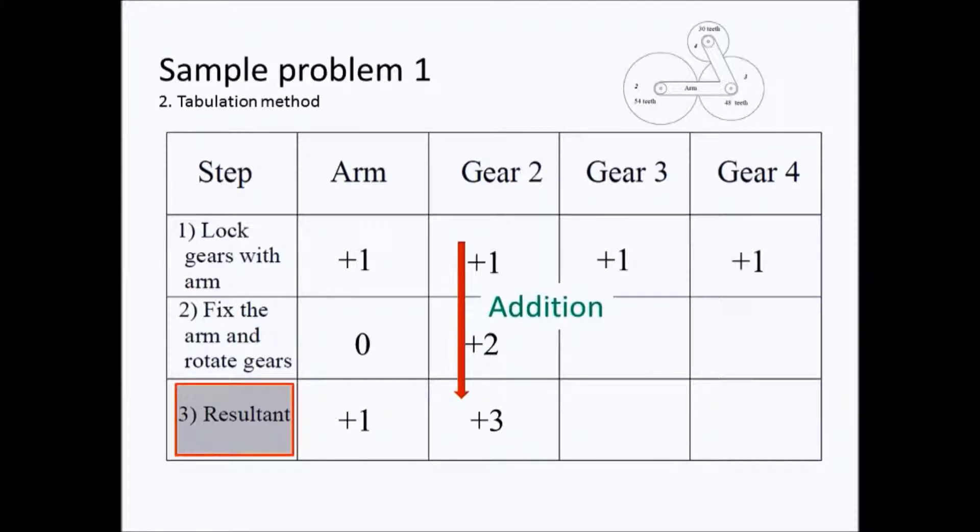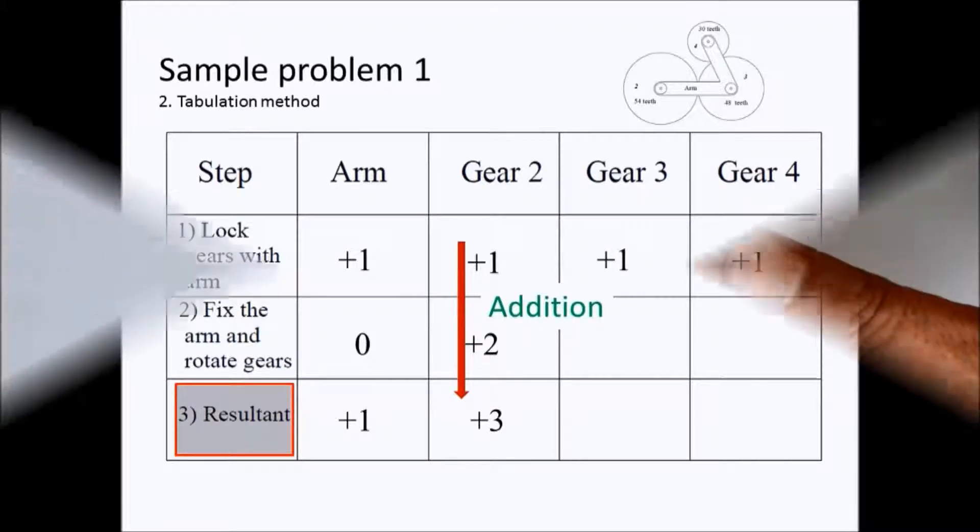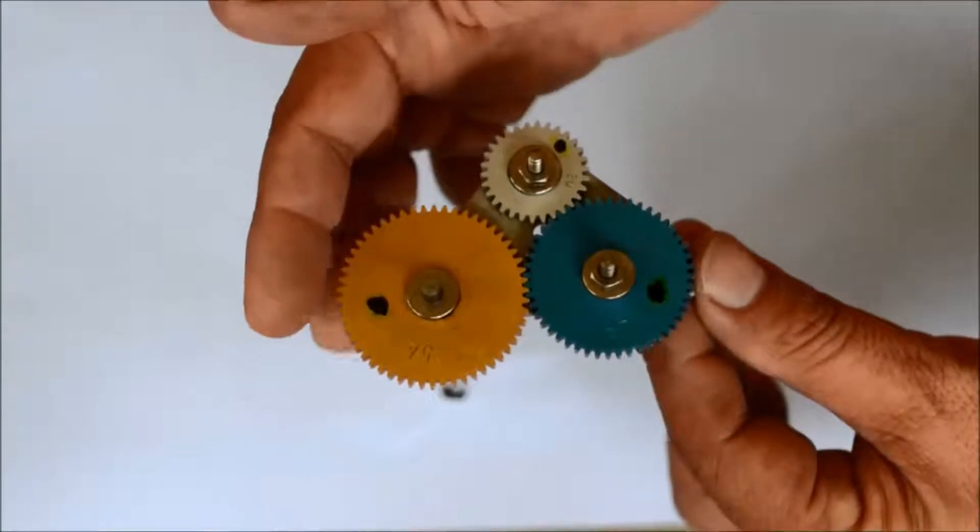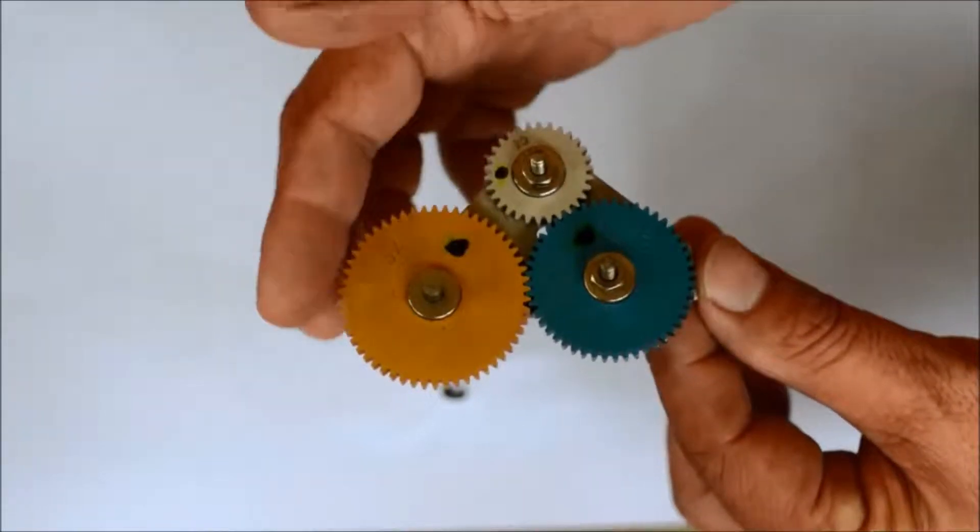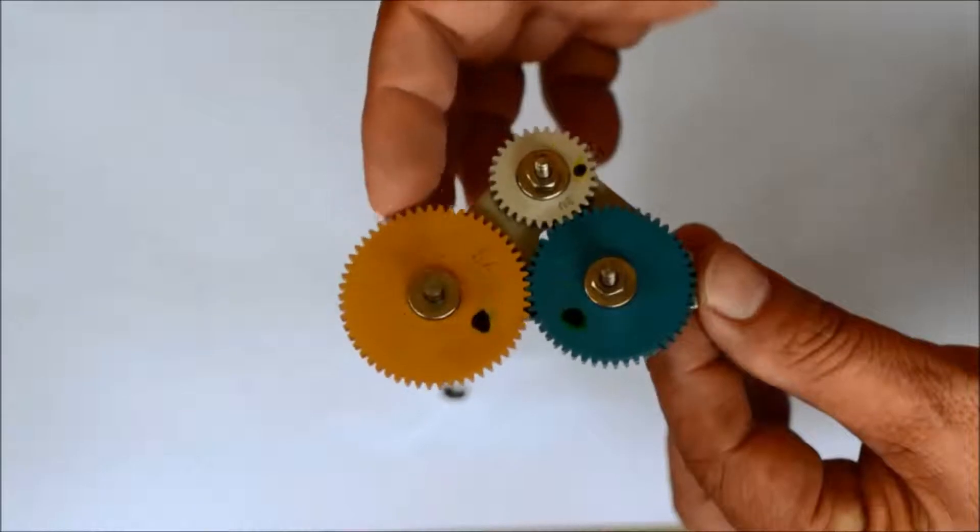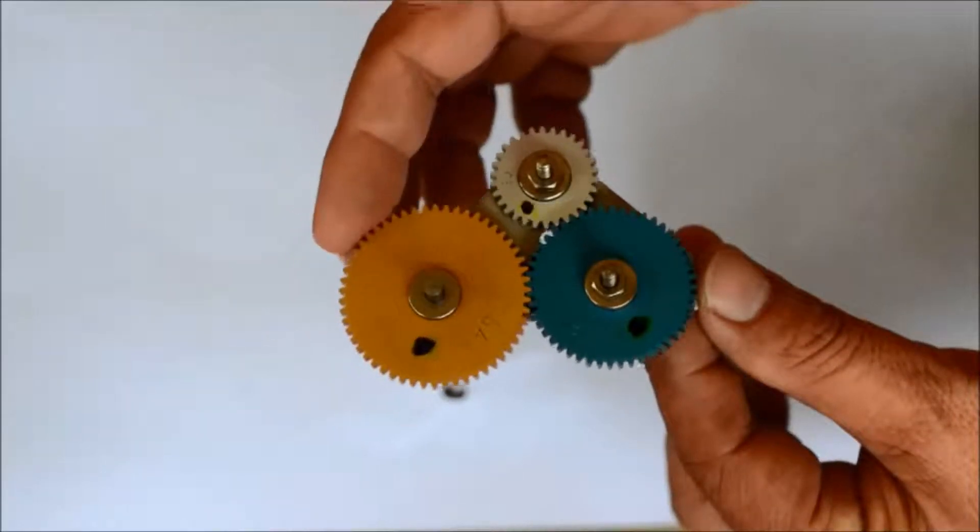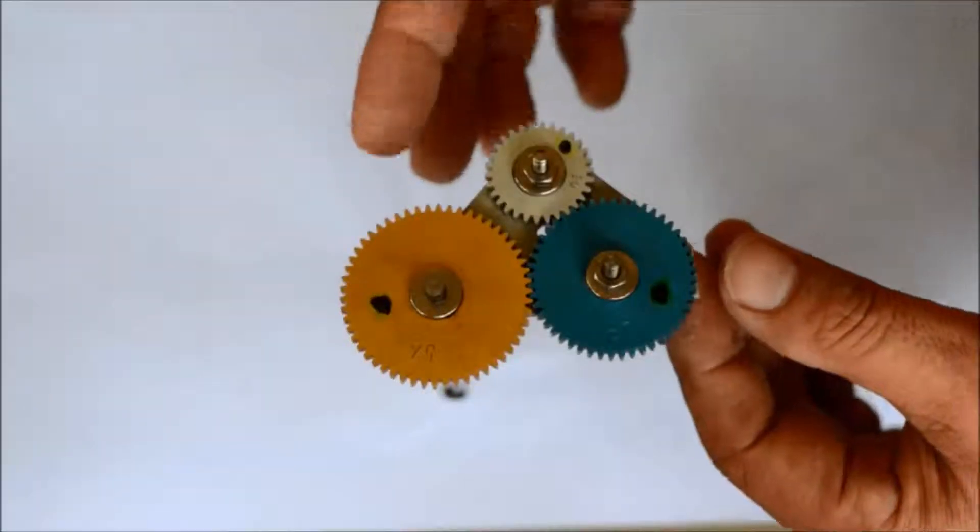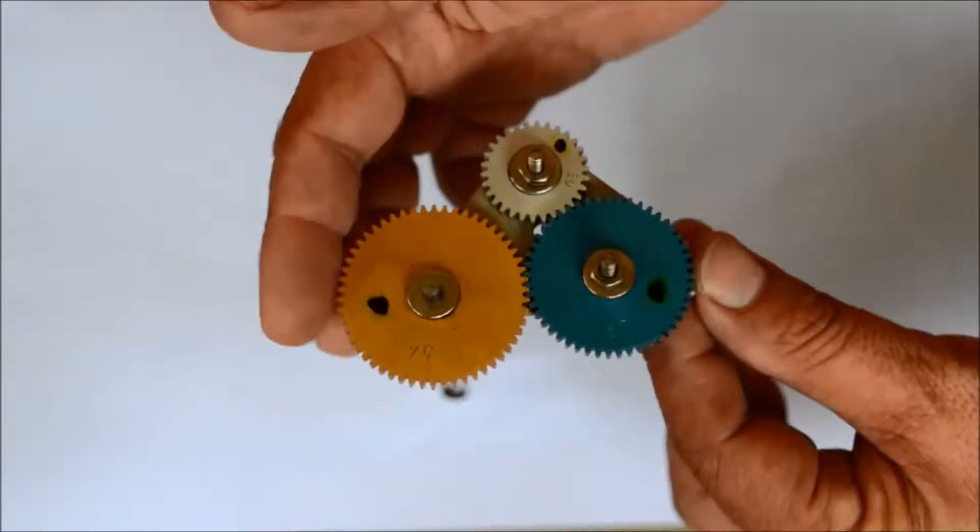Now let us see our actual mechanism for the second step. The arm is fixed and we rotate gear two twice, and as we rotate gear two twice, gears three and four also rotate.